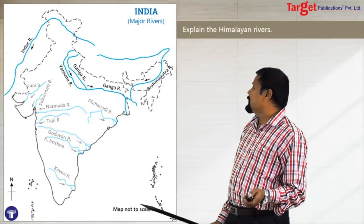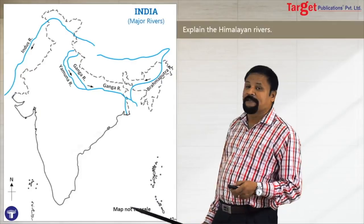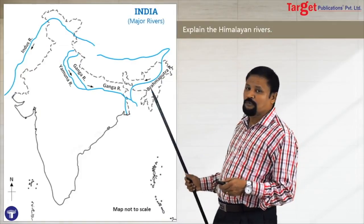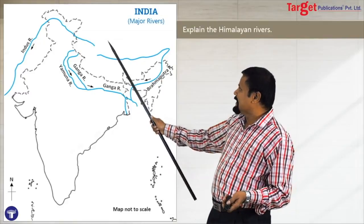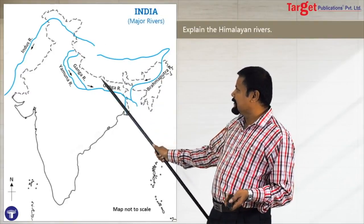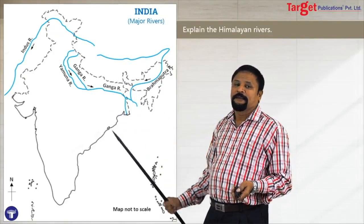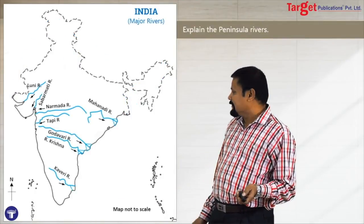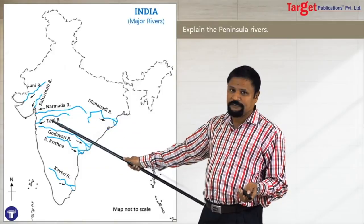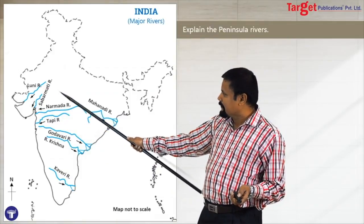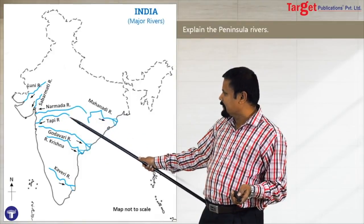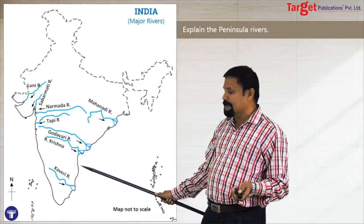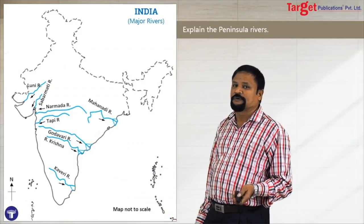Sometimes they may ask specifically: explain the Himalayan rivers. In that case, show only Himalayan rivers — Indus, Brahmaputra, Ganga, and Yamuna. If the question is about the peninsular rivers, show Luni, Sabarmati, Narmada, Tapi, Mahanadi, Godavari, Krishna, and Kaveri.